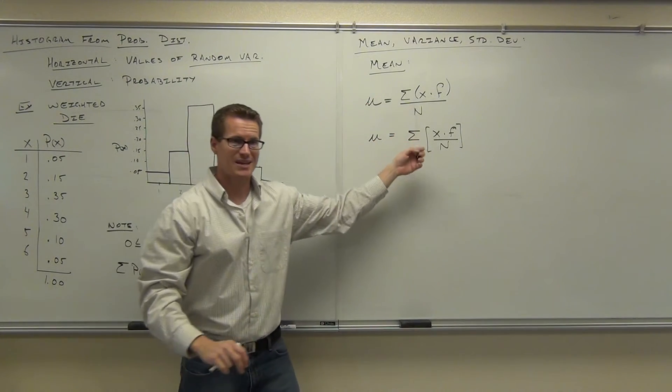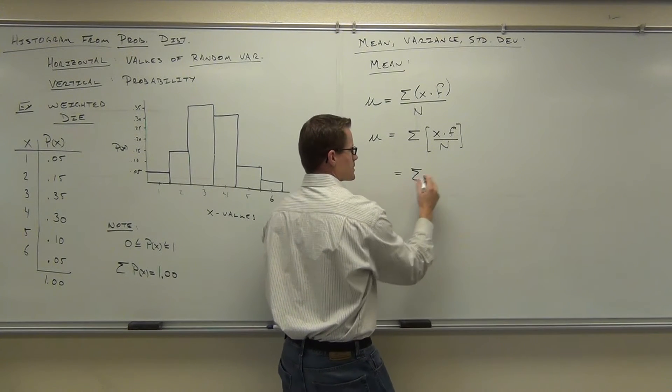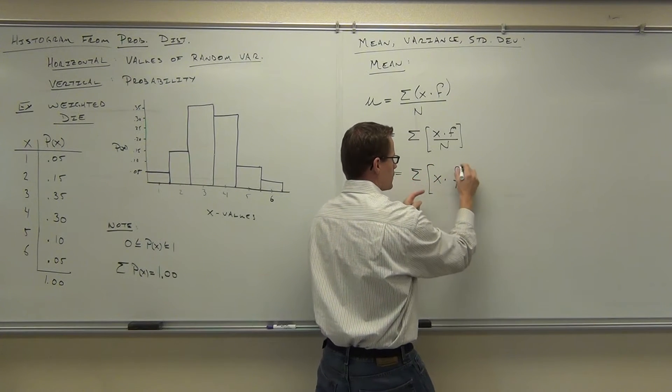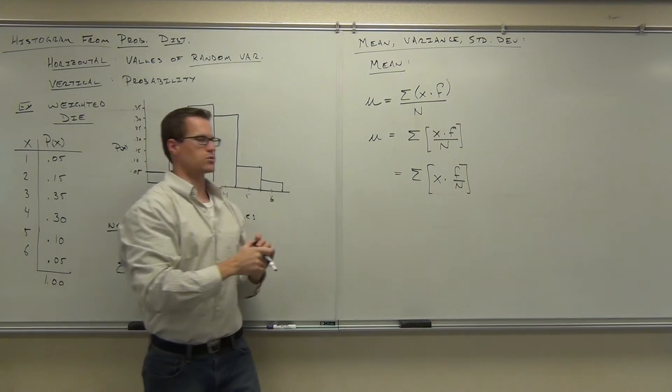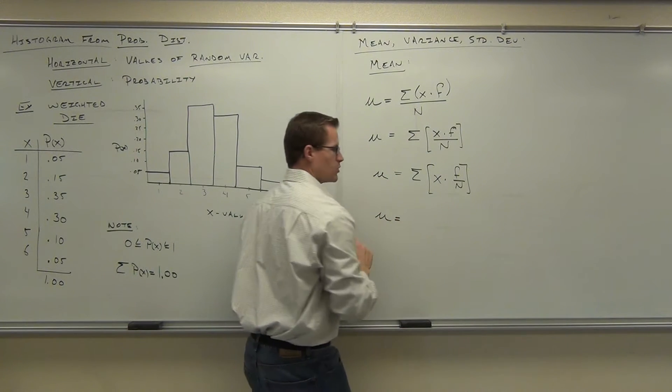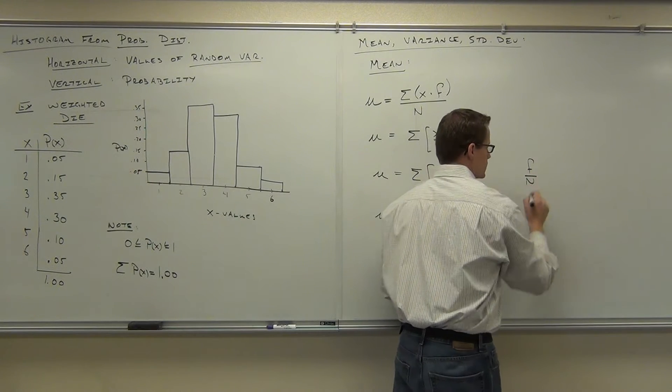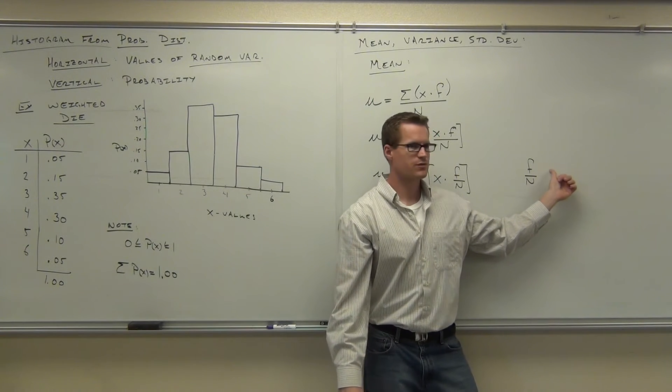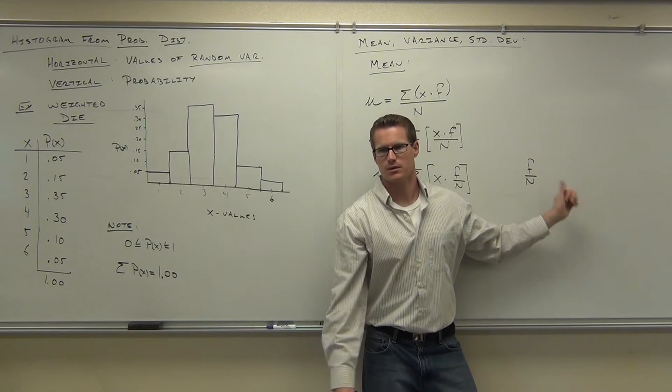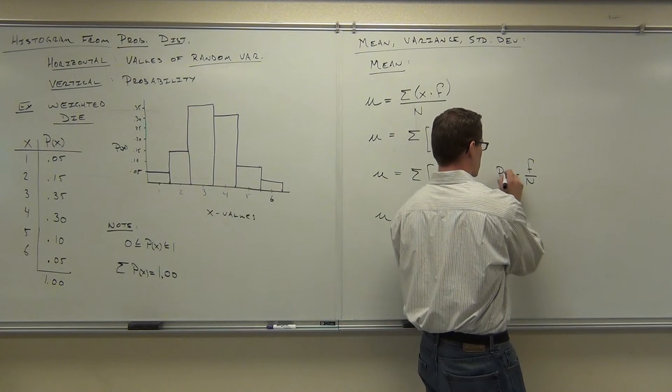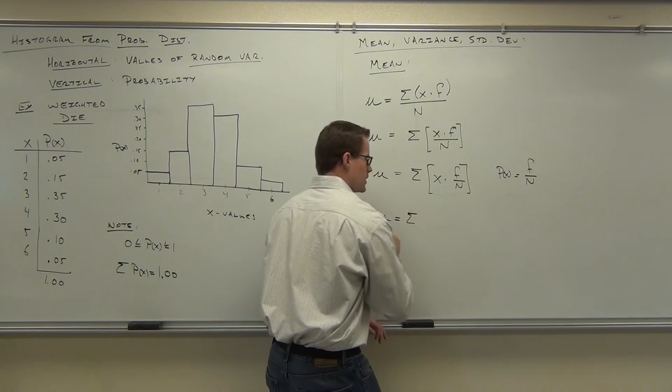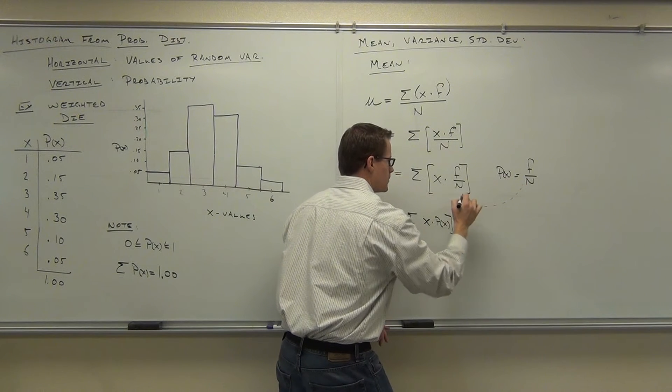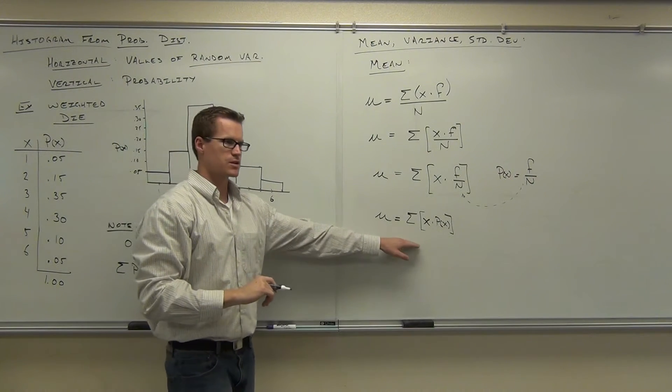But once we do this, it's pretty obvious what we have here. Check it out. This is the same thing as a sum of x times f over n. Do you believe that? That's for sure true. Well, here's the cool part: what is a frequency divided by the total number of items? That's outcomes divided by total number of possible outcomes, right? That's a probability. So what we have here is the sum of x times p of x by a little substitution. This expression right here, this equation, that's your mean.